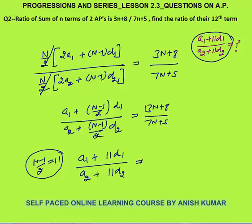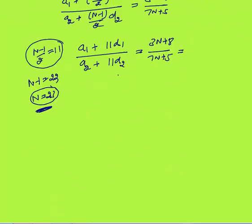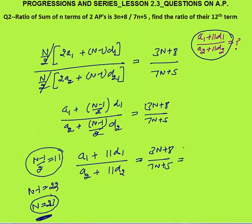So n minus 1 by 2 equals 11, meaning n minus 1 equals 22, so n equals 23. Putting n equals 23 into (3n plus 8) divided by (7n plus 5): 23 into 3 is 69 plus 8 equals 77; 23 into 7 is 161 plus 5 equals 166. The ratio of 12th terms is 77 by 166 as the final answer.